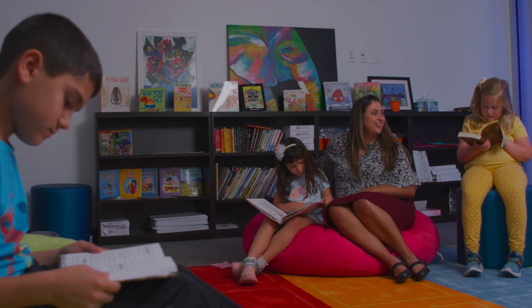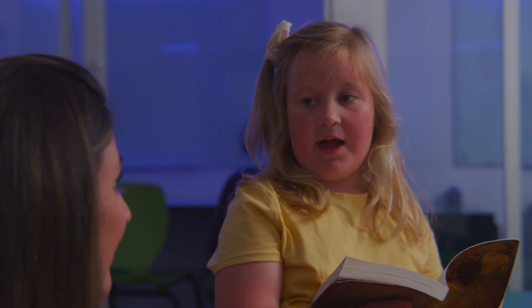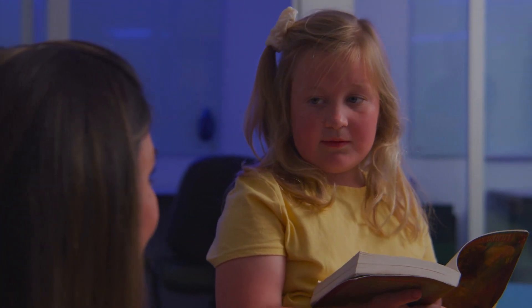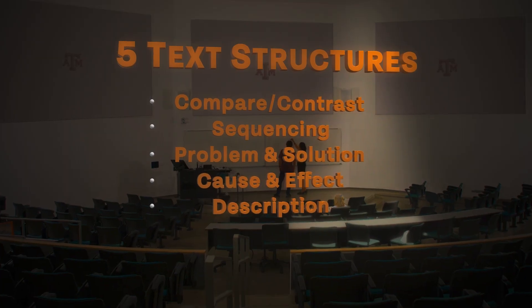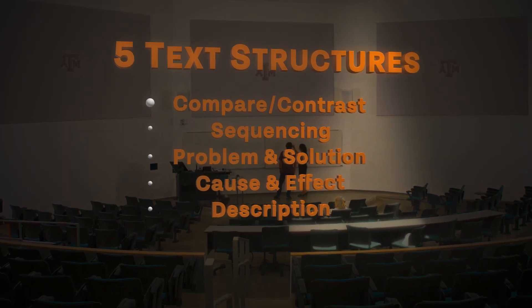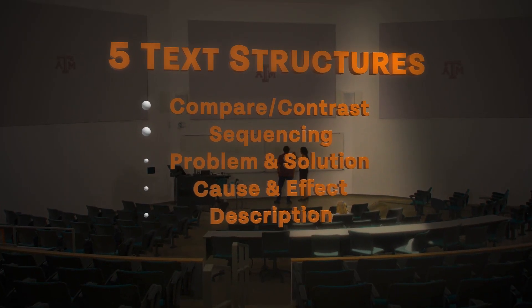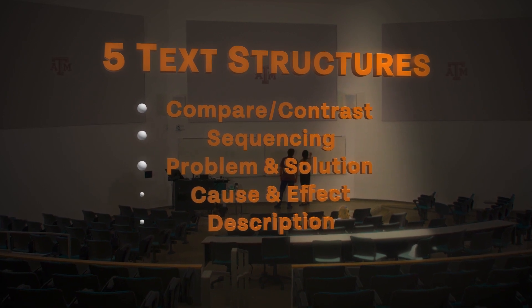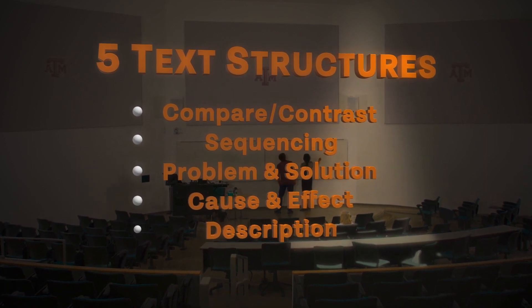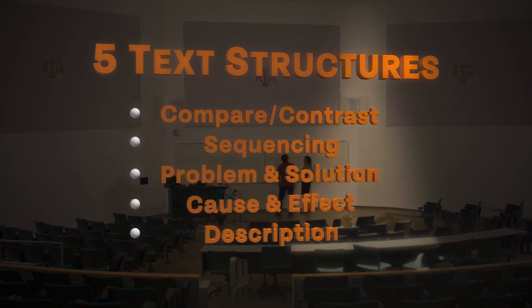With the CAT method, instead of telling children to read it again or look for what's important, we teach children to select important ideas and connect their information logically using five text structures: compare and contrast, sequencing, problem and solution, cause and effect, and description text structures.